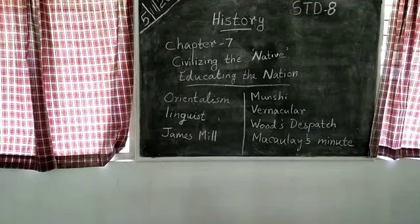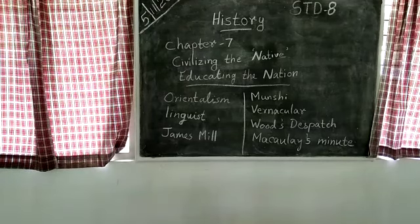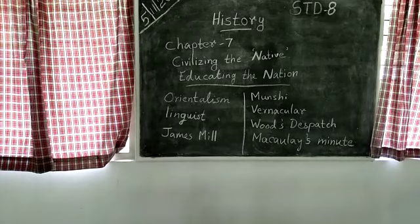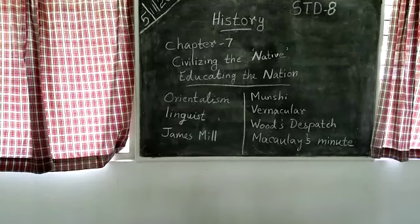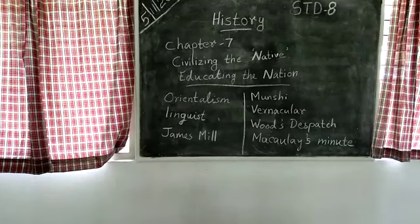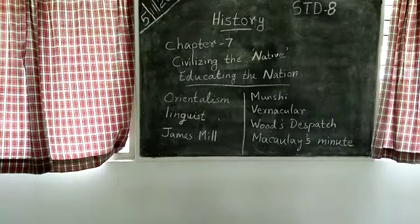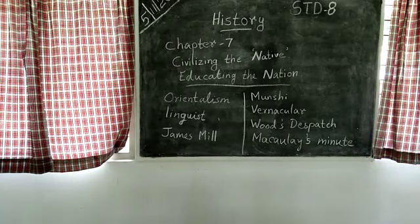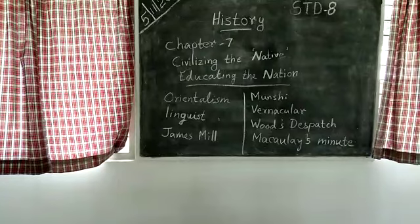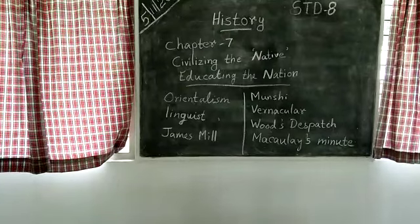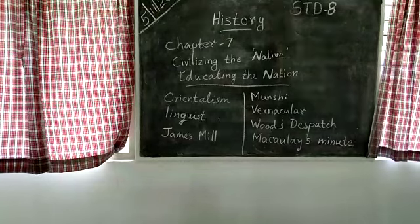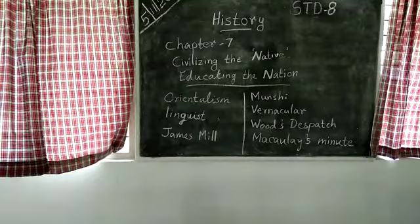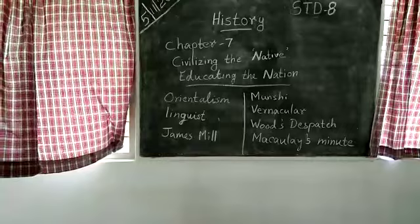Critics argued that the knowledge of the East was full of errors and unscientific thought. James Mill was one of those who attacked Orientalism. By the 1830s, the attack on Orientalists became sharper. One of the most outspoken critics was Thomas Babington Macaulay. Macaulay viewed India as an uncivilized country and his aim was to civilize its people.